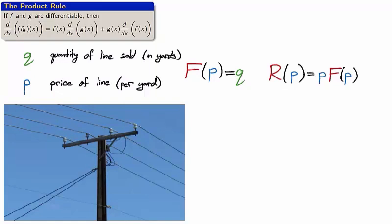We can write f of p equals q to represent the relationship between price and quantity sold. The revenue earned for selling at the price p is the price times the quantity sold, which can be represented by the revenue function r of p, which equals p times f of p. Suppose that the manufacturer prices power line at $10 per yard and sells 100,000 yards per week. That is, f of 10 equals 100,000.